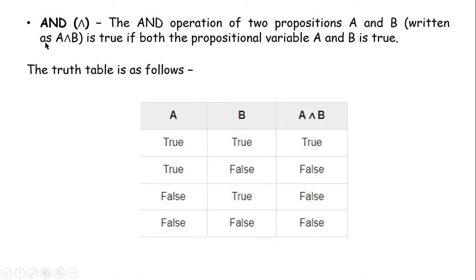The next connective is the AND operation. The AND operation on propositional variables A and B, written as A AND B, is true only if both A and B are true. If A is true and B is true, then A AND B is true. If A is true and B is false, then A AND B is false because both A and B are not true.